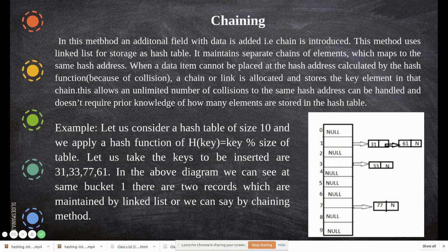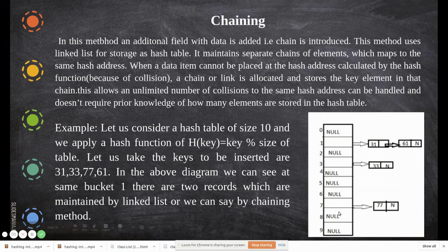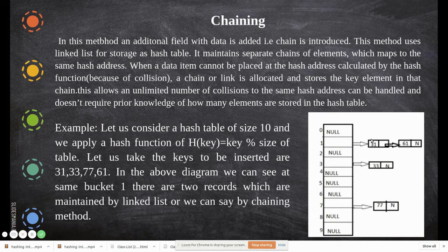In this method, an additional field with the data is added - that is the chain. This method uses a linked list for storage as a hash table, so it maintains separate chains of elements which map to the same hash address. When a data item cannot be placed at the hash address calculated by the hash function because of collision, a chain or link is allocated and stores the key element. For example, the value 31: when you compute 31 mod 10 it generates 1, so you form a link and store the data there - this is the information field and this is the next field.